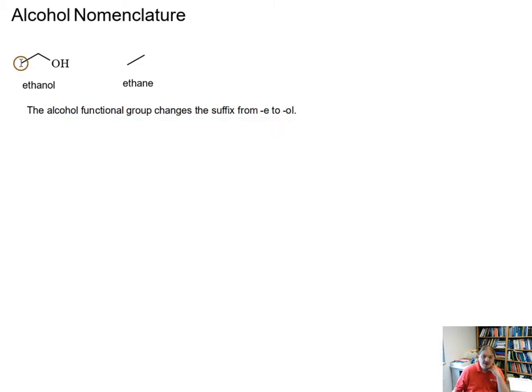Naming an alcohol, at least the simple alcohols, is as simple as identifying the parent alkane, ethane, and putting -ol at the end of it.